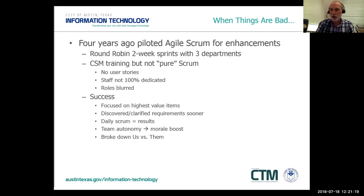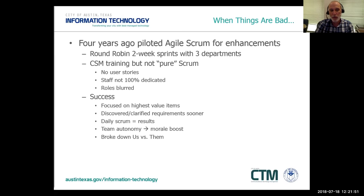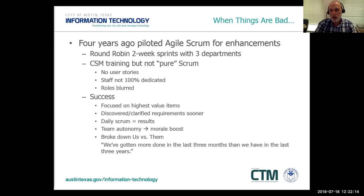After three or four months we did a larger retrospective. Feedback: the team was able to focus on highest-value items and deliver right away. Requirements were discovered and clarified in days rather than a month. Daily scrums put pressure on team members to deliver. Most importantly, people felt autonomy in determining solutions, giving them a huge morale boost. For the first time there was a breakdown of the 'us versus them' mentality — product and technical sides came together as one team.